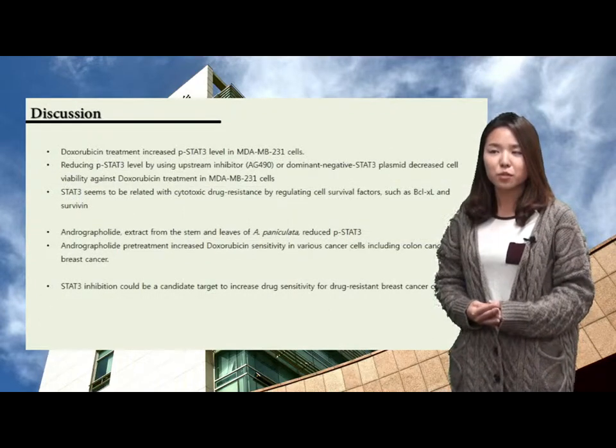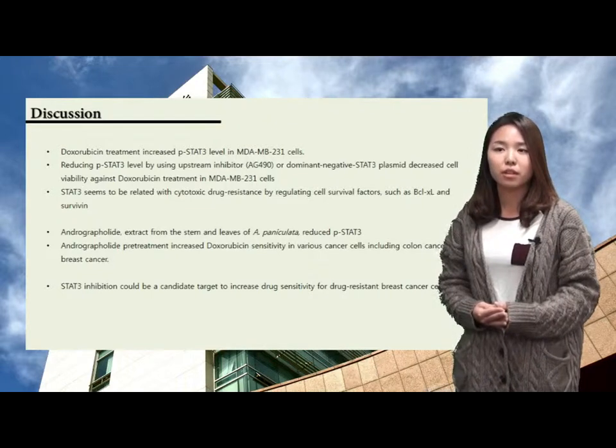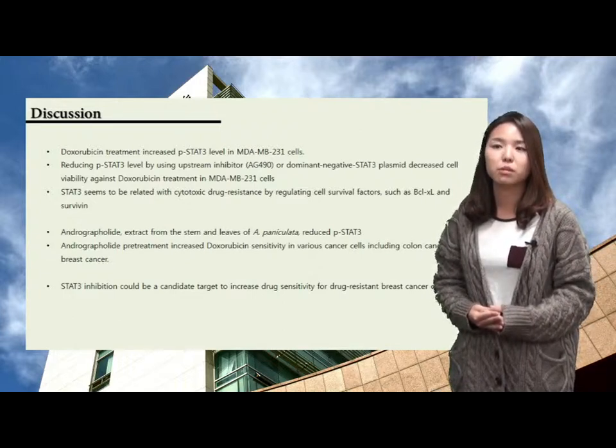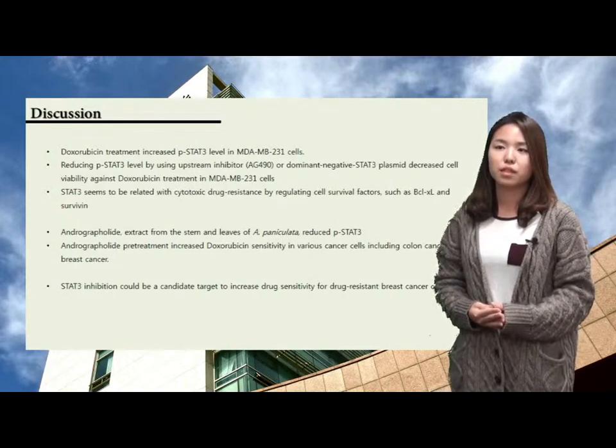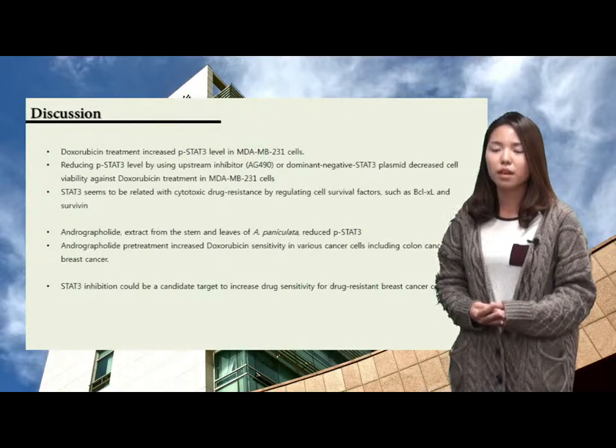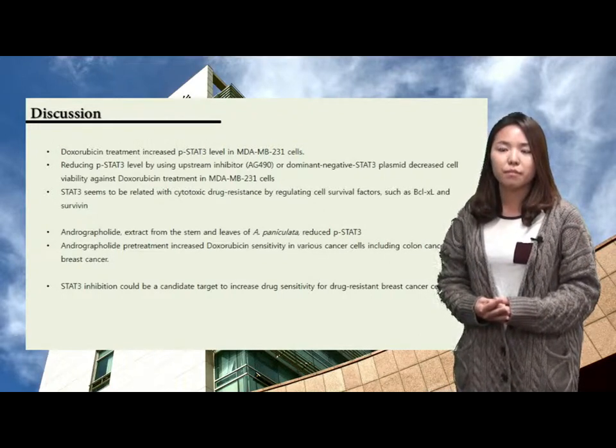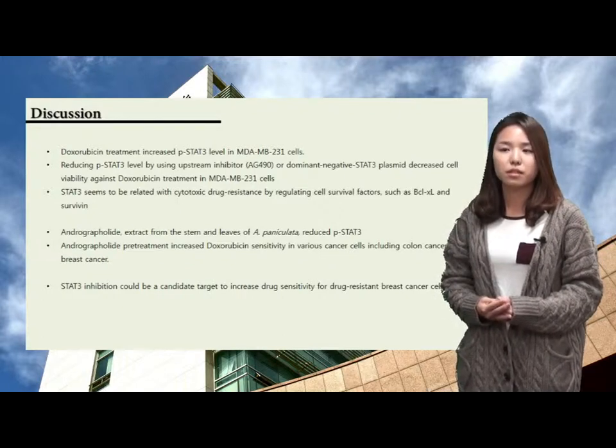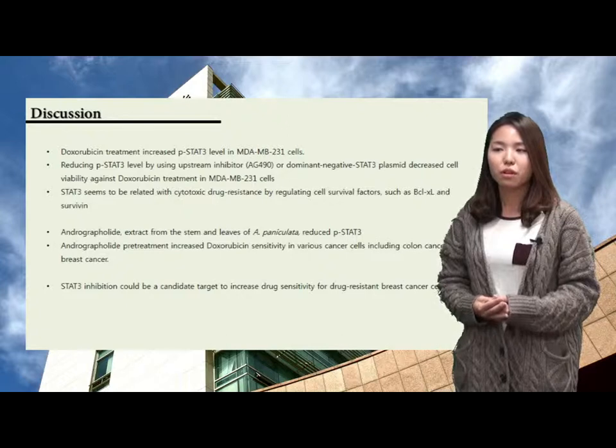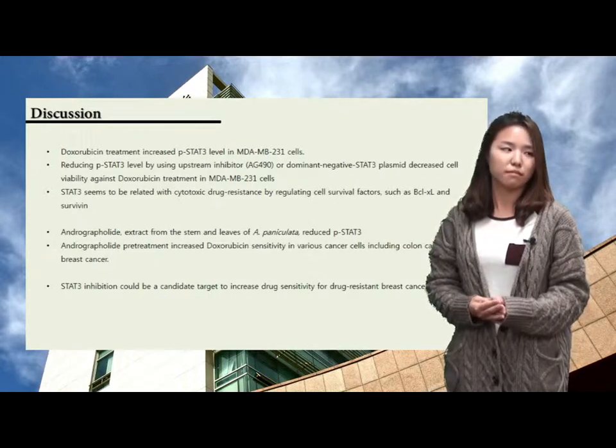In conclusion, doxorubicin treatment increased phospho-STAT3 level in MDA-MB-231 cells. Reducing phospho-STAT3 level through upstream inhibitor AG490 or dominant-negative STAT3 plasmid transfection decreased cell viability against doxorubicin treatment in MDA-MB-231 cells. Also, STAT3 seems to be related with cytotoxic drug resistance by regulating cell survival factors such as BCL-XL and survivin. Andrographolide, an extracted medicine from the stem and leaves of traditional herb, reduced phosphorylation of STAT3. This andrographolide pretreatment increased doxorubicin sensitivity in various cancer cells including colon cancer and breast cancer due to phospho-STAT3 inhibition. So, according to these papers, STAT3 inhibition could be a candidate target to increase doxorubicin sensitivity for breast cancer cells.